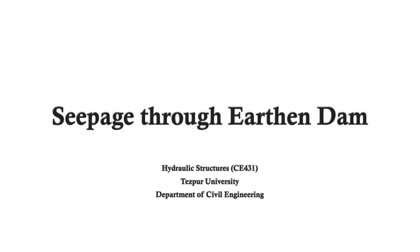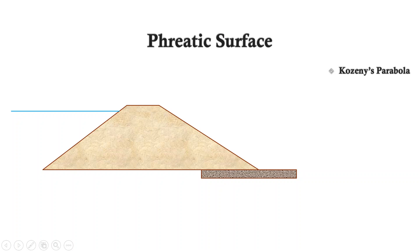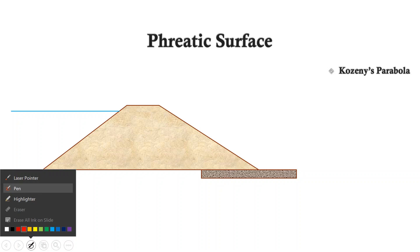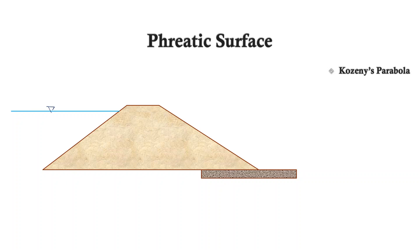In this video we are going to discuss how seepage occurs through an earthen dam, that is an embankment dam. Consider a homogeneous earthen dam with water on the upstream side, provided with a drainage blanket in the downstream near the toe. This drainage blanket is made of coarse grain material which provides an easier drainage path for seepage water, so instead of flowing all the way through the width of the earthen dam, it follows a shorter path.